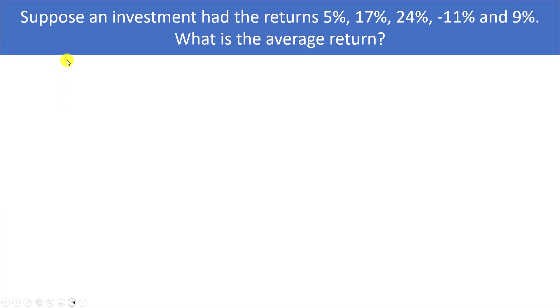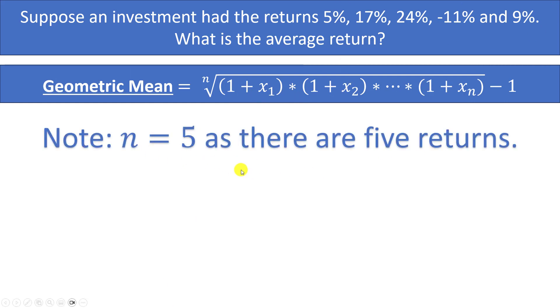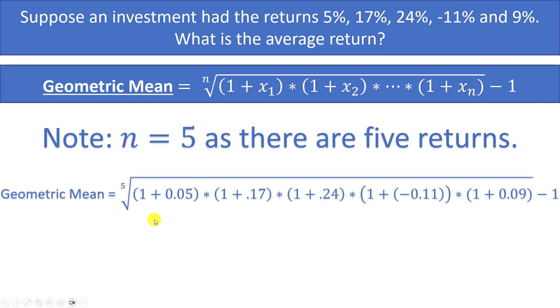Here is another example. Suppose an investment had the returns 5%, 17%, 24%, -11% and 9%. What is the average return? Well since we have rates of returns we should be using the geometric mean. Note that in this case we have five different returns so our value for n in the formula is going to be 5. To find the geometric mean we can just plug into the formula. We have the fifth root of 1 plus each of those returns. This will simplify to the fifth root of all these values multiplied together minus 1.